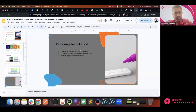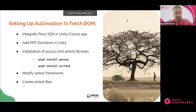We explored POCO and AirTest. Once we integrate the POCO SDK, we can get the hierarchy of the Unity layer. AirTest is also used to inspect not just game engine elements but also the native layer - similar to how Appium inspector works, you can inspect normal Android native elements. Now, there are five steps for setting up POCO in our Appium framework. First is integrating the POCO SDK in our Unity or Cocos application. The POCO SDK is available on GitHub as open source, and it takes barely five minutes to set up.